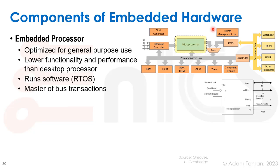The embedded processor will be optimized for general-purpose use. It usually has lower functionality and performance than a desktop processor, whose whole purpose is high performance. Here its main operation, depending on the actual application and system, is just to control the whole system. It runs some sort of software, which can be a real-time operating system, or it may run what we call bare metal, where it just jumps to the first instruction in the program and goes from there. It's also going to be the primary master of bus transactions — the microprocessor will be one of the masters.